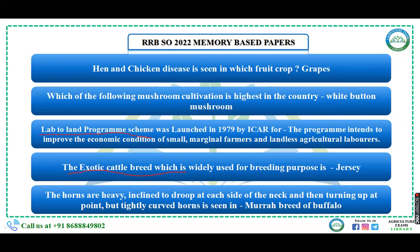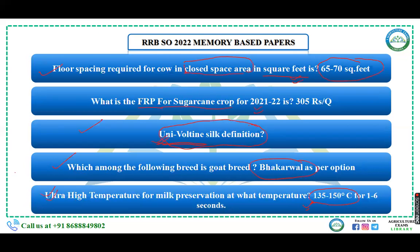Again from animal husbandry: the exotic cattle breed widely used for breeding purposes — that is Jersey. Again from animal husbandry: horns that are happily inclined to droop on each side of the neck and then turning upward with highly curved points is seen in the Murrah breed of buffalo.